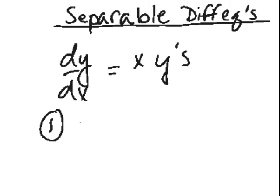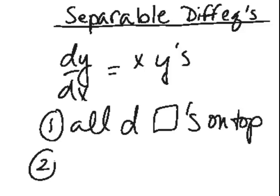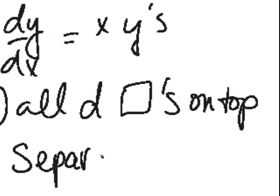You're typically going to have some sort of equation in which you have x's and y's, however they are interconnected. All you want to do is get all d-whatever's on top in the numerator and then separate the variables. So all the x's on one side, all the y's on the other, s's and t's, whatever you're working with. And then you integrate.